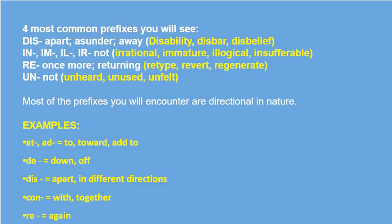Let's look at some common prefixes. Notice these first four — they are the most frequently used prefixes you're going to encounter and account for 97% of prefixed words in printed school English. Number one is 'dis,' meaning apart, asunder, or away. In yellow I have given you some examples: disability, disbar, disbelief. How about disrespect? Whenever you use the word 'dis' today meaning to disrespect somebody, did you know it came from a common prefix?